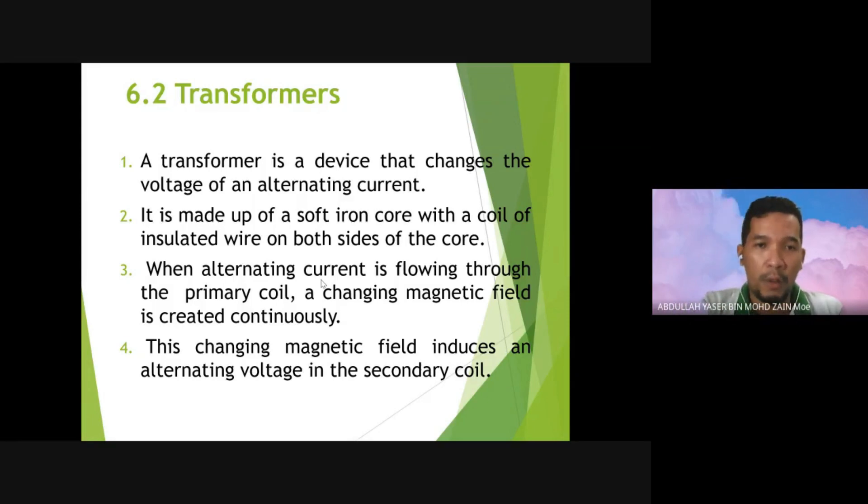On both sides of the core, when alternating current or AC is flowing through the primary coil, the changing magnetic field is created continuously. This changing magnetic field induces an alternating voltage in the secondary coil.